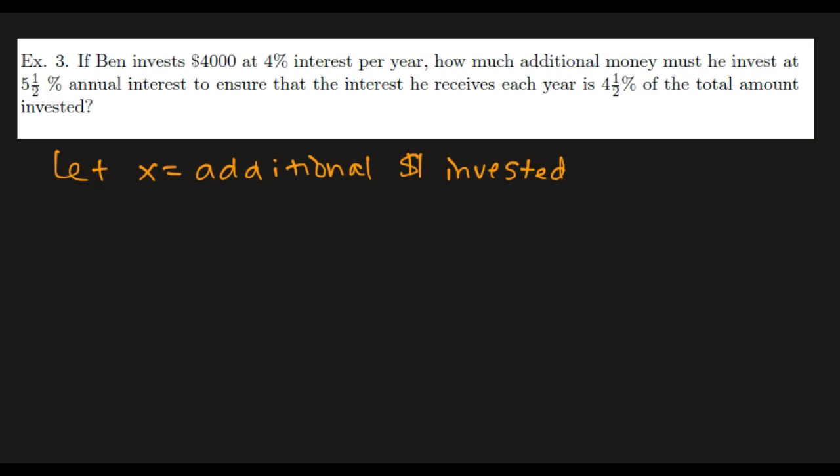Example 3, if Ben invests $4,000 at 4% interest per year, how much additional money must he invest at 5.5% annual interest to ensure that the interest he receives each year is 4.5% of the total amount invested? Sounds a little complicated, but let's just start with what's the question? How much additional money? So my variable answers that. It's the amount of additional money invested. Now let's talk about what we have. I have $4,000 invested at 4%. So my overall interest is going to be 4,000 times 0.04 because it's just a simple interest rate. I'm just talking about the interest here. I don't need to do 1.04 if I don't want to because I'm just talking about the interest. So that's the interest on that amount.